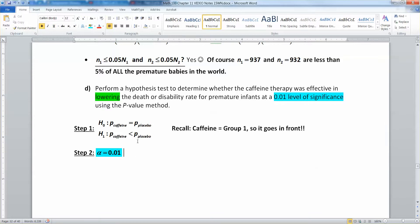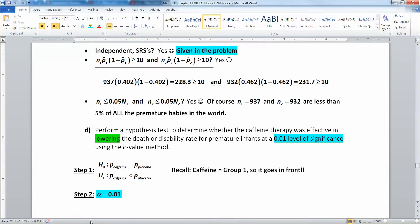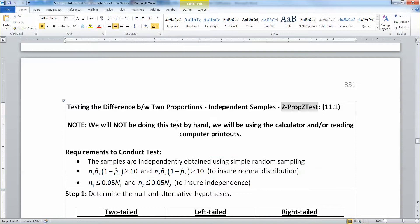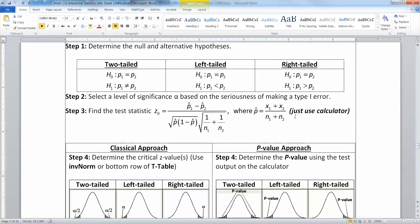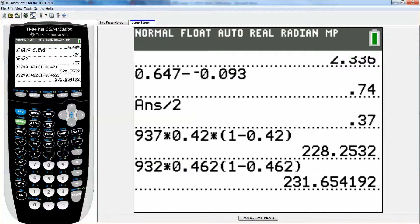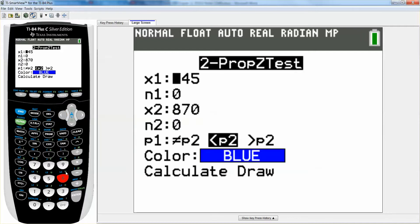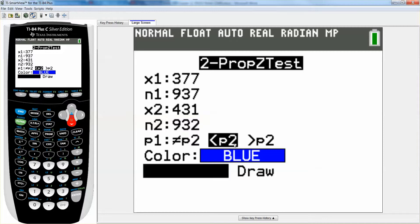Now we need to go run this and find our test statistics. We're going to get it from the calculator because we're not going to do this by hand. If we're going to do that with the calculator, go to stat, go to tests, I want number six, 2-Prop-Z test, and then I'm going to type in my values. So x1 is 377, n1 is 937, x2 is 431, n2 is 932, and we want to make sure we pick less than to match our alternative.